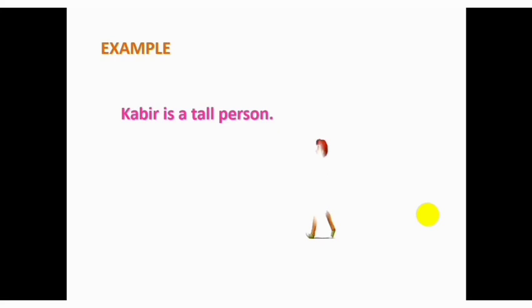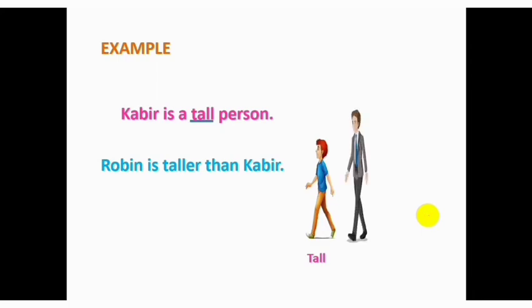COVID is a tall person. Here, with the help of tall, we are describing COVID not comparing with another person. So, it is positive degree. Robin is taller than COVID. Here, with the help of taller, we are comparing two person's height. So, it is a comparative degree.